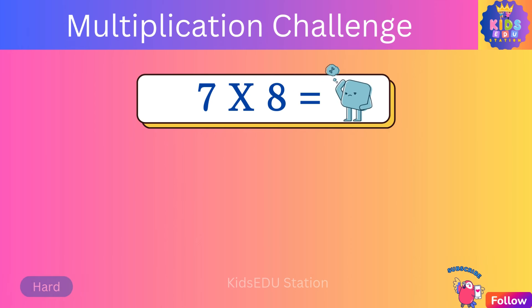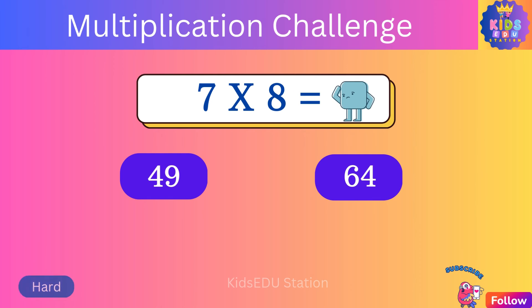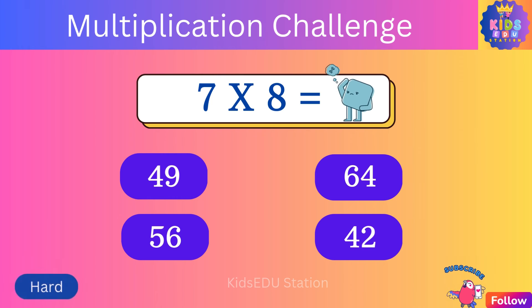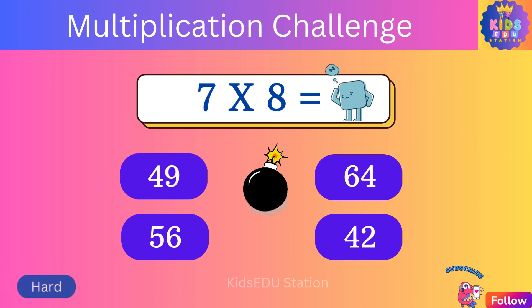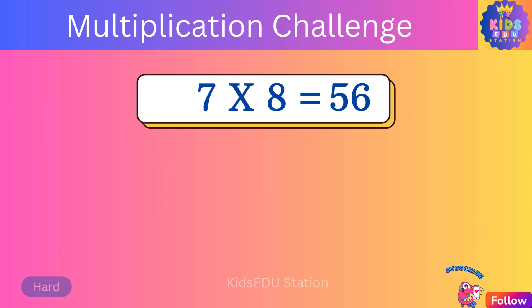What is seven times eight? Forty-nine, sixty-four, fifty-six, forty-two. Seven times eight is fifty-six.